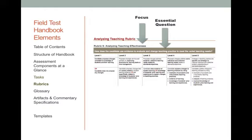Each rubric has a similar structure, and I'll describe some key features using rubric 9 as an example. First, each rubric has a focus and essential question. For rubric 9, the focus is analyzing teaching effectiveness, and the essential question is: 'How does the candidate use evidence to evaluate and change teaching practice to meet the varied learning needs?' Second, each rubric specifies performance levels running from 1 to 5. The levels characterize a progression from early novice to accomplished teacher. Level 1 is not ready to teach. Level 3 is ready to teach with induction-level support, and that is where you should aim to achieve on nearly all rubrics. Levels 4 and 5 describe practices of a veteran teacher to a master teacher. I've heard some describe level 5 as 'a room where no one lives' — even masterful veteran teachers do not live at a 5 every lesson every day.